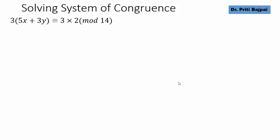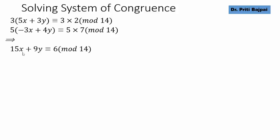Let's say we make the coefficient of x same. We multiplied the first congruence by 3, second one by 5 and this gives us 15x plus 9y is congruent to 6 mod 14 and minus 15x plus 20y is congruent to 35 mod 14.